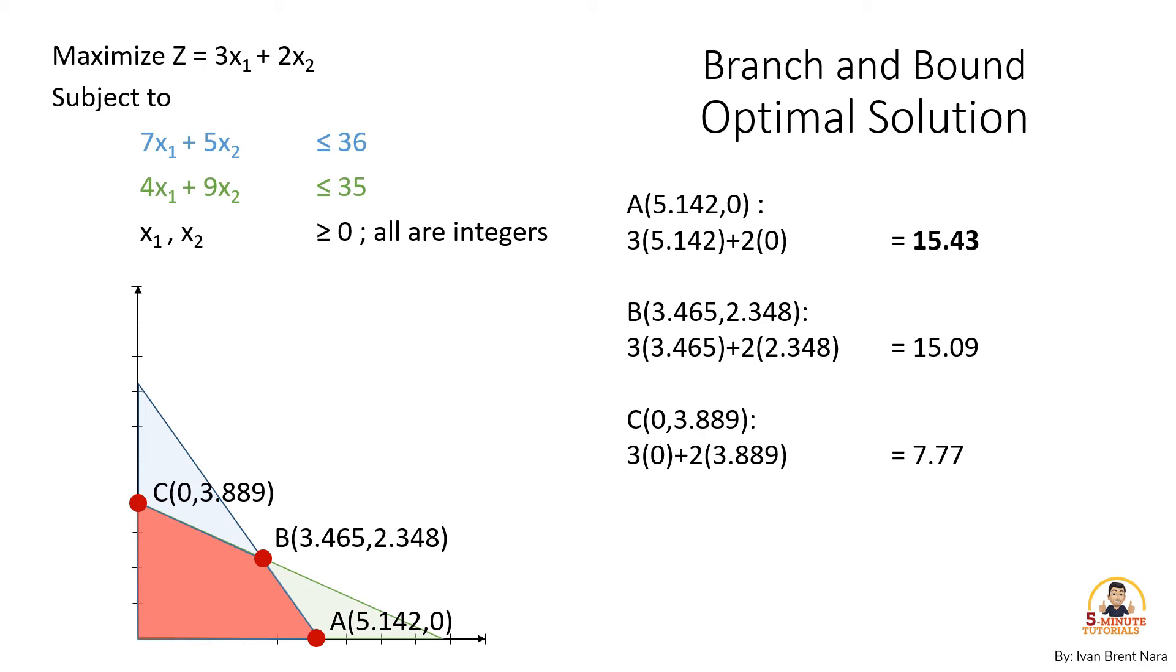Point A with x sub 1 equals 5.142 and x sub 2 equals 0 has a value of 15.43. Point B with x sub 1 equals 3.465 and x sub 2 equals 2.348 has a value of 15.09. And point C with x sub 1 equals 0 and x sub 2 equals 3.889 has a value of 7.77.